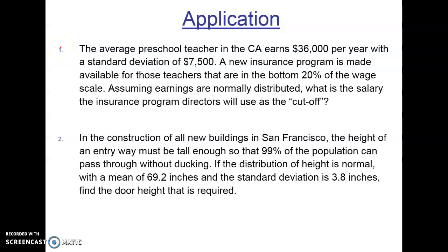Alright, picking up from the last video, let's do some practice applications. This one says the average preschool teacher in California earns $36,000 per year with a standard deviation of $7,500. A new insurance program is made available for those teachers that are in the bottom 20% of the wage scale. Assuming earnings are normally distributed, what is the salary that the insurance program directors will use as the cutoff?